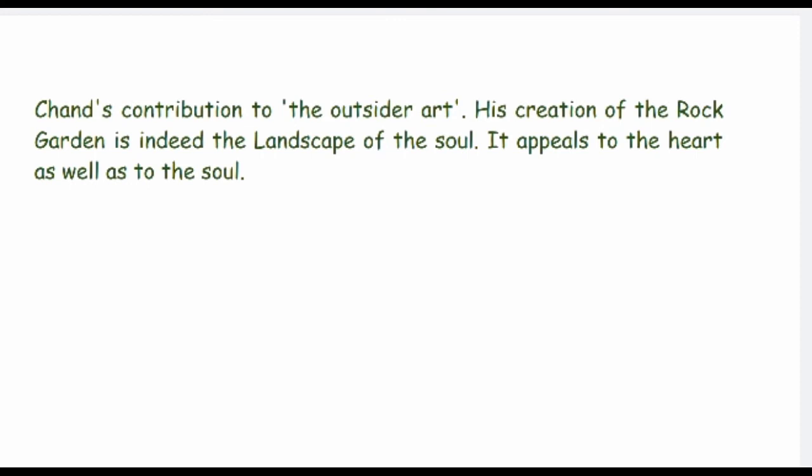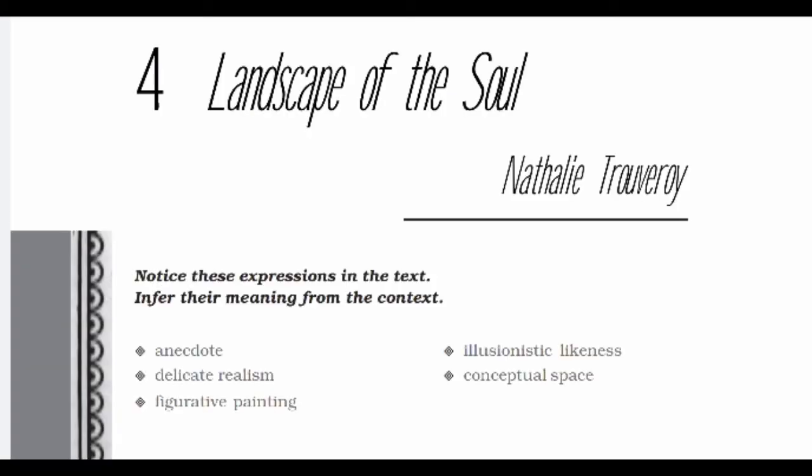For further understanding, we are supposed to read the chapter. Please open the book on page number 34-35, 'Landscape of the Soul' by Natalie Travaro. There are some important words you should try to find in the dictionary: anecdote, totalitarianism, figurative paintings, illusionistic likeness, and conceptual space. Let's start the story.